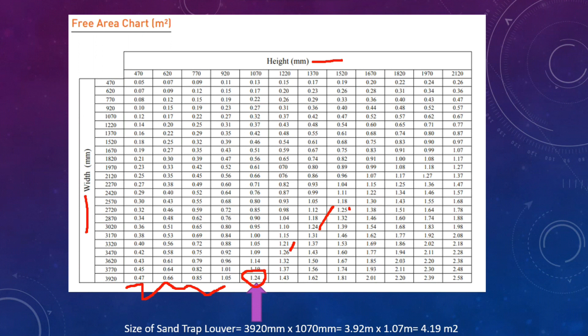The selected sand trap louver for this case is 3920mm by 1070mm — that is 3920 and 1070mm from the table. Converting to meters: 3.92m by 1.07m. Finally, the area of the sand trap louver for the 1200 liters per second case is 4.19 square meters.